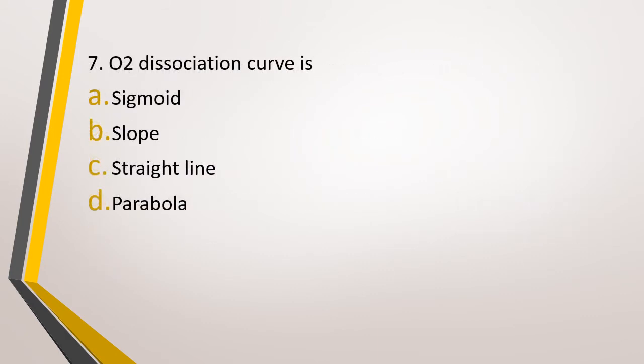Question number 7. Oxygen dissociation curve is? Option A: Sigmoid. Option B: Slope. Option C: Straight line. Option D: Parabola. What is the shape of oxygen dissociation curve? The correct answer is option A, that is sigmoid shape.